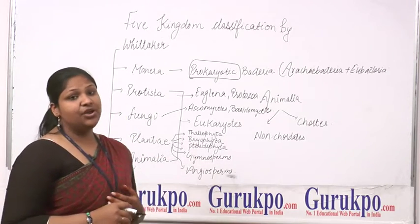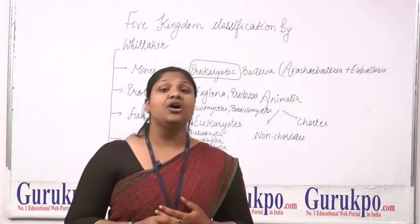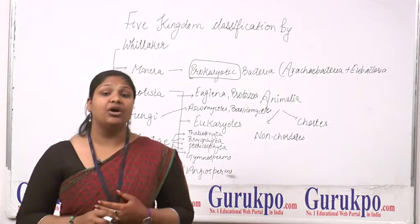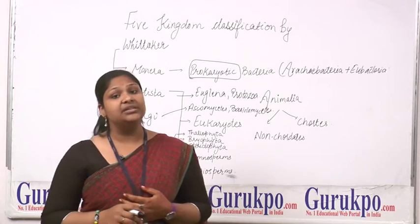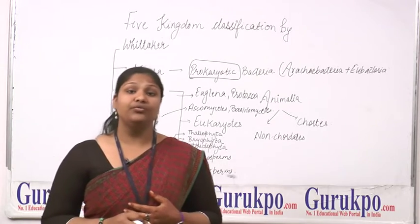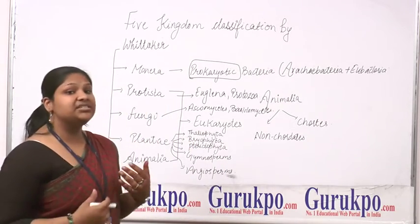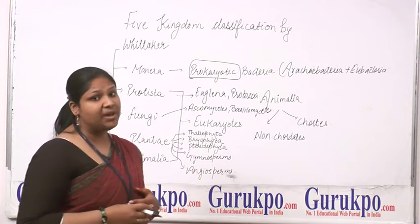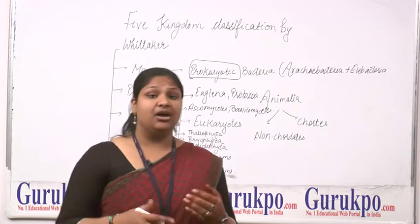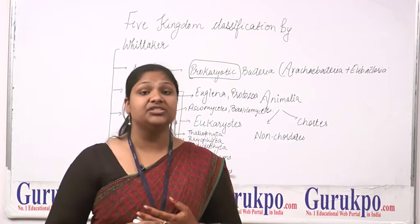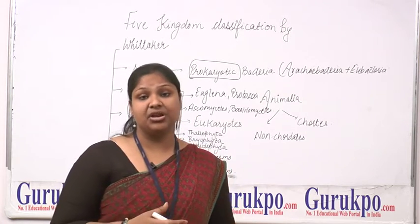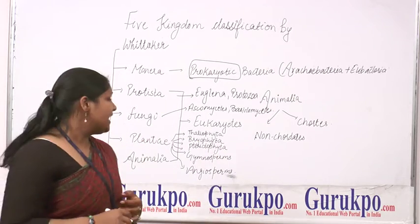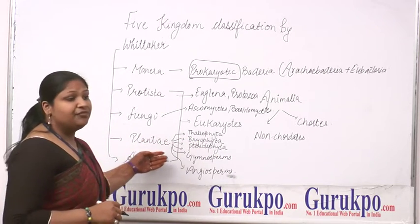Third is Fungi. Fungi are eukaryotic but they depend on other organisms for their food — they cannot synthesize their own food. Fungi are also classified into various classes like Ascomycetes and Basidiomycetes, which develop through asexual and sexual reproduction.